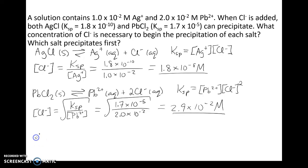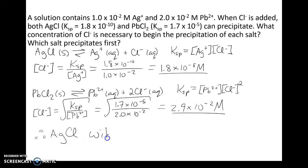So we can say that silver chloride will precipitate first, because we need a much lower concentration of chloride to form the silver chloride precipitate.